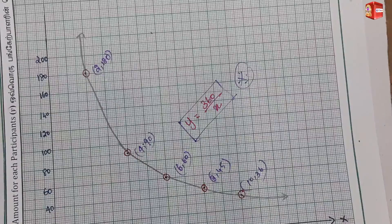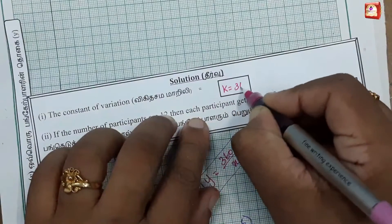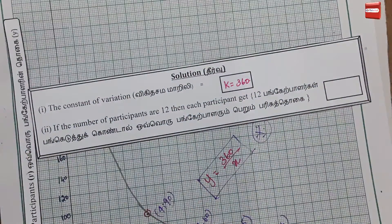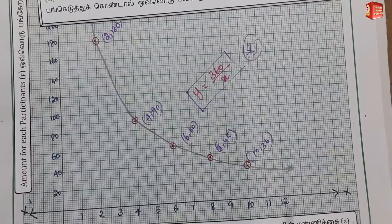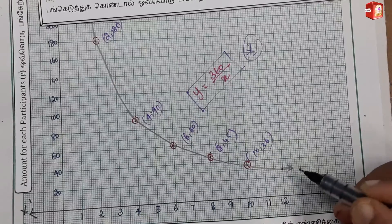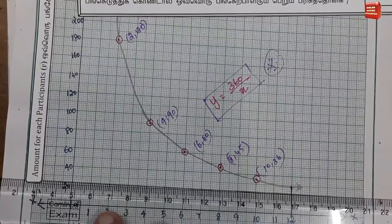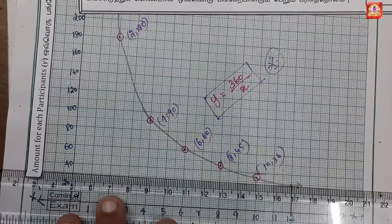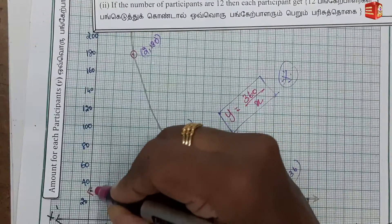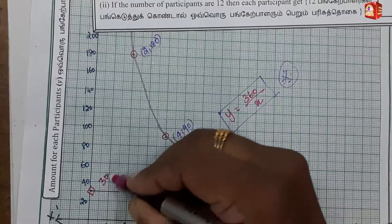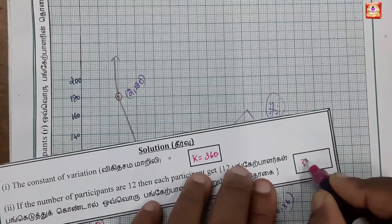Okay, you get the question. If we get the constant of variation, k is equal to 360. Next, if the number of participants is 12, we find the corresponding y value. From the graph, reading at x equals 12, the answer is approximately 30. So if the number of participants is 12, the amount each participant gets is 30.